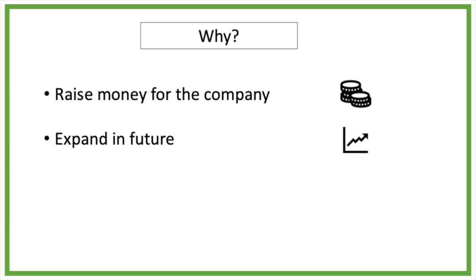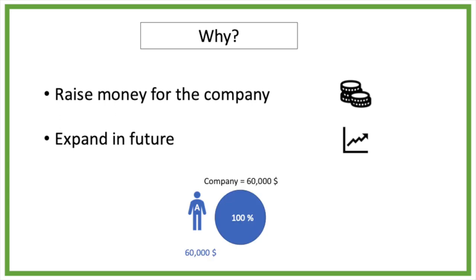For example, person A owns a company worth $60,000, but he wants to grow in the future and wants to raise $40,000 extra. To raise $40,000 extra, person A can issue stocks to investors. By issuing these stocks, the total value of the company is now $100,000. But now person A is only 60% owner of the company compared to the 100% before.